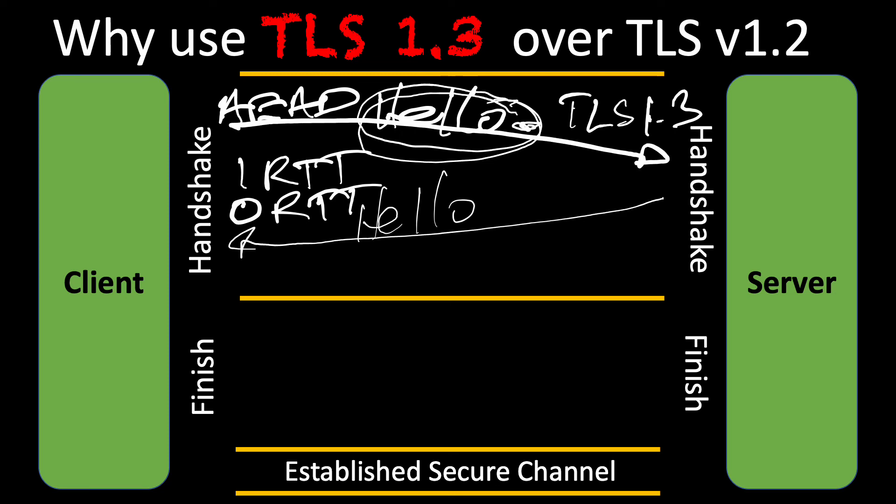We also have perfect forward secrecy. With perfect forward secrecy, someone can't hack the private key and go back to look at the history of previous sessions — it's unique for each session that's been set up. We're not sharing that private key; a new private key is being generated for every session. That's the unique aspect of perfect forward secrecy. As you can see, there are a number of key benefits of using TLS version 1.3 in the categories of performance and security.